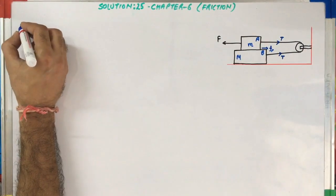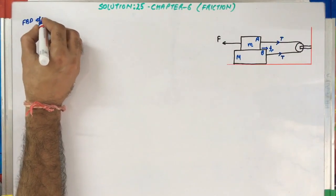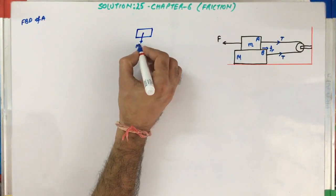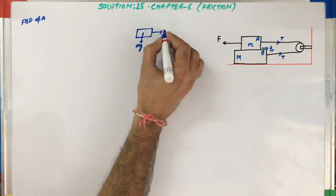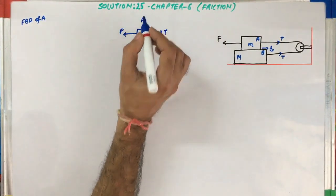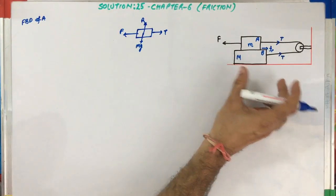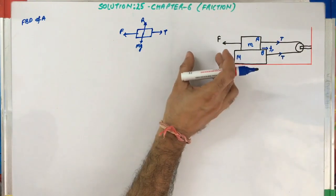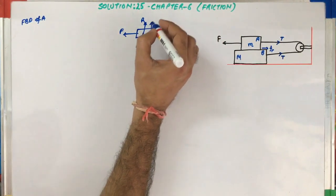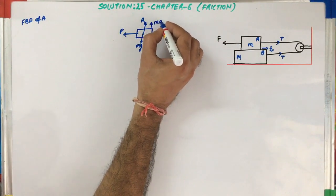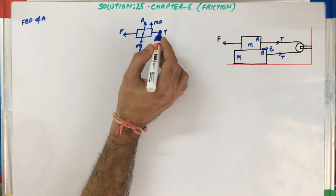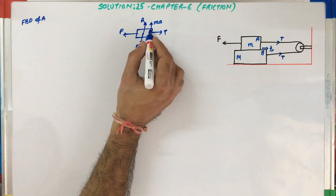First, we will draw the FBD of block A. For block A, the mg force acts downward, tension T is in the string in the right-hand direction, the applied force is F, the reaction force is R, and there will be a pseudo force due to the motion of the lift. Since the lift is moving downward with acceleration a, the pseudo force acts on this block in the upward direction with a value of m times a. This force is additionally acting on this block compared to the previous problem.